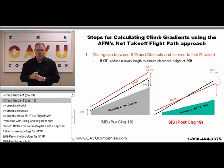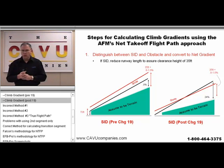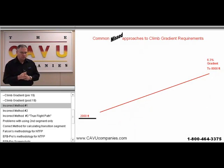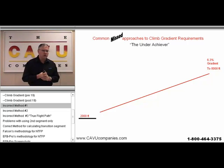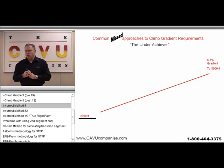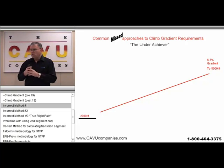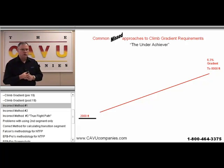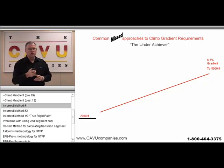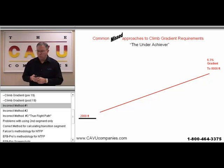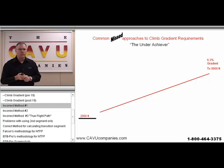Some of the approaches that pilots use — in particular as an instructor, I noticed this — there are really three. They basically all use the second segment only data. The first one I refer to as our 'achievers,' as I'm sure you'll appreciate here in just a moment.